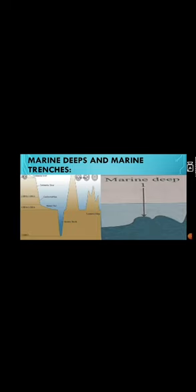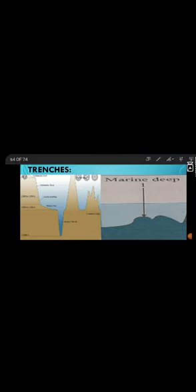The mid-oceanic submerged hills and marine trenches are geographically the most active areas of the ocean bed. There are many active volcanoes here, and these areas are also earthquake prone. Earthquakes and volcanic eruptions occurring on the ocean bed give rise to tsunamis in the nearby coastal areas.